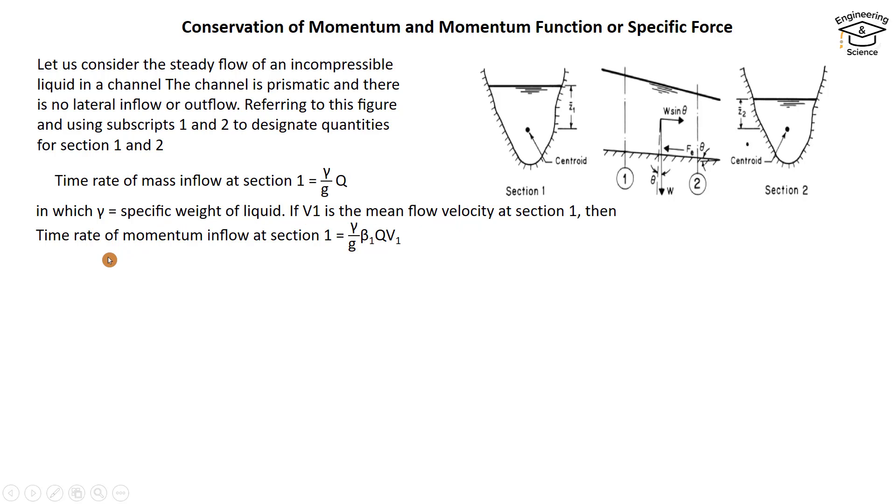The time rate of momentum inflow at section 1 equals γ/g × β₁ × Q × V₁, where β₁ is a momentum coefficient introduced to account for non-uniform velocity distribution.